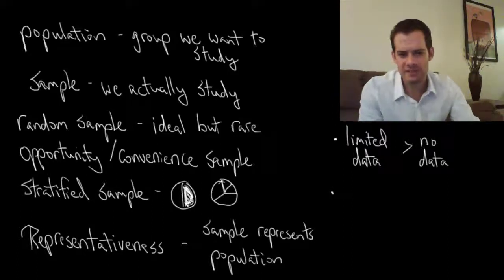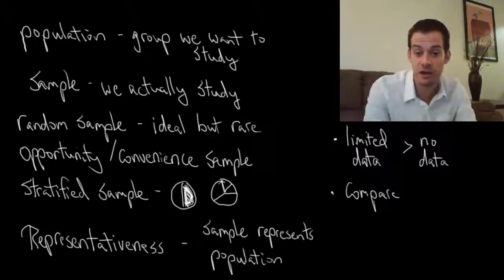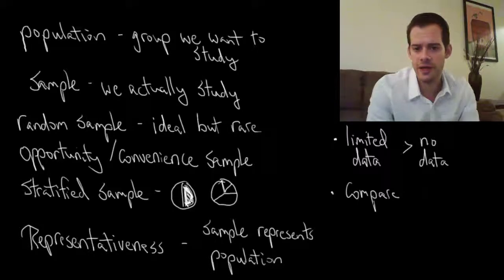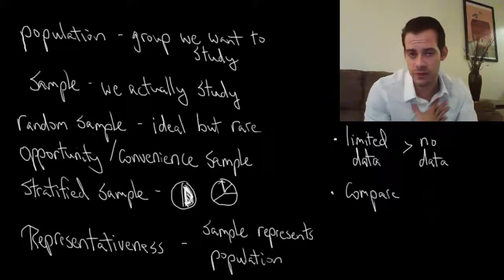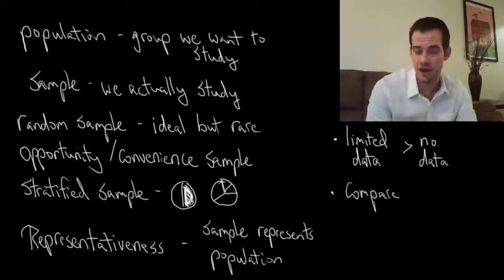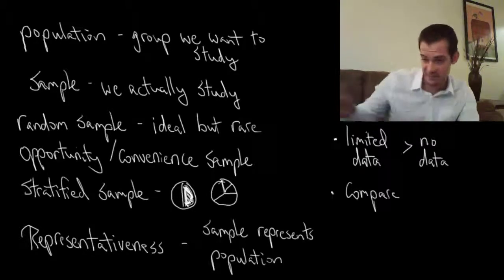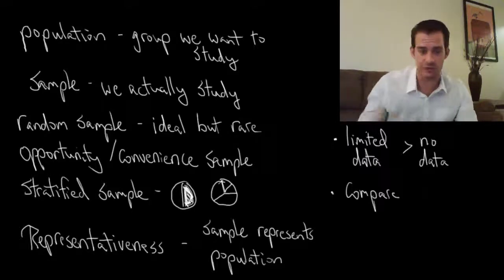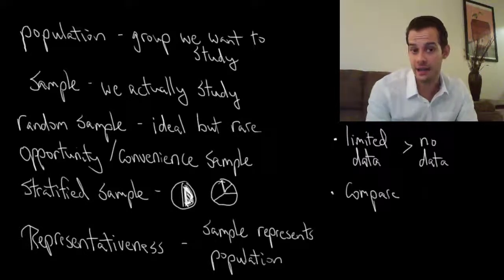The second reason why non-representative samples can be okay is that we can compare them. If researchers share their information with one another, then we can say, alright, I did my study with a non-representative sample. And you did your study with a different non-representative sample. And somebody else studied the same thing with another non-representative sample. Well, we can sit down and look at these three sets of data and see how they compare to one another.